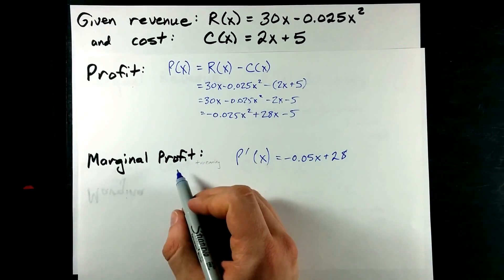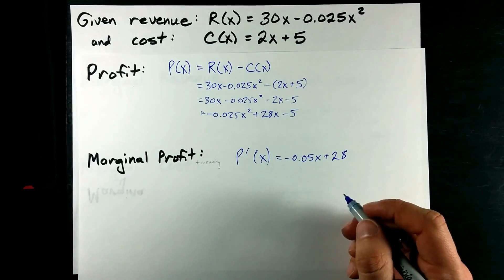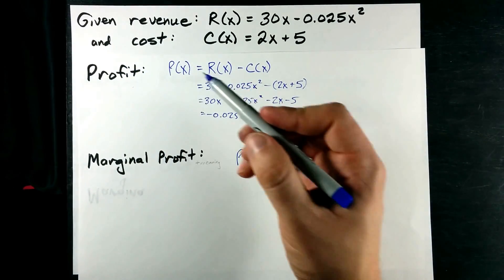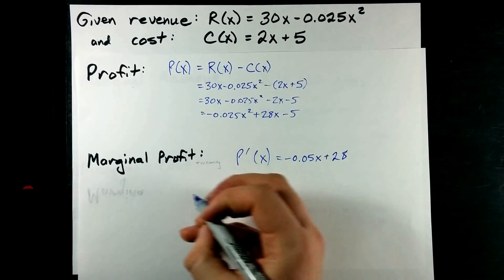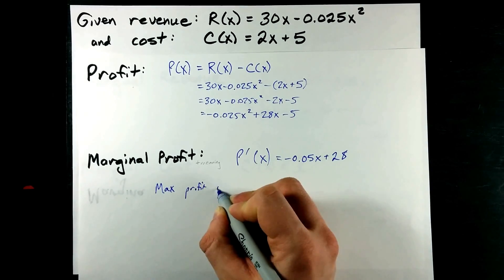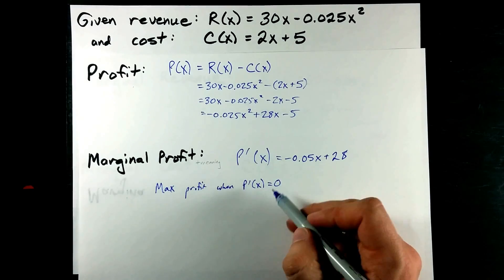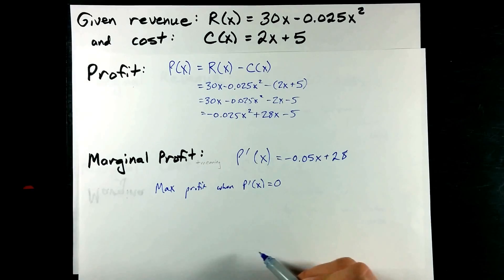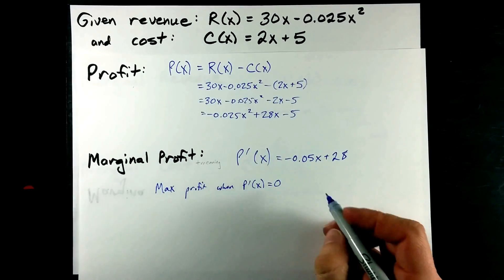You want marginal profit to be positive, otherwise you're losing money, right? You want profit to be increasing for as long as you can, because that's how you maximize profits. But, you'll have your maximum profit when your marginal profit has finally decreased to 0. Assuming the marginal profit was positive and eventually trends negative, you'll have reached your max profit when it's equal to 0.